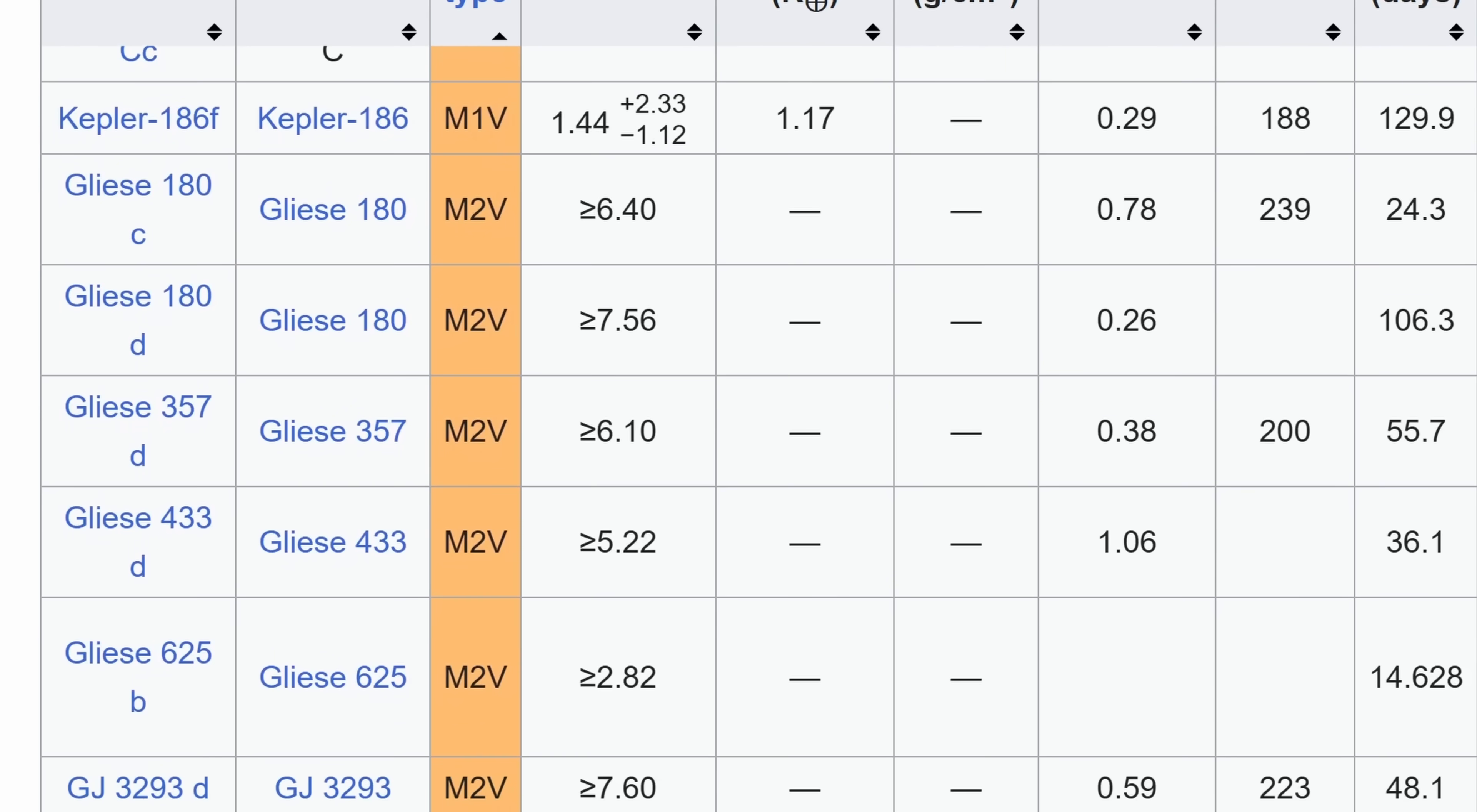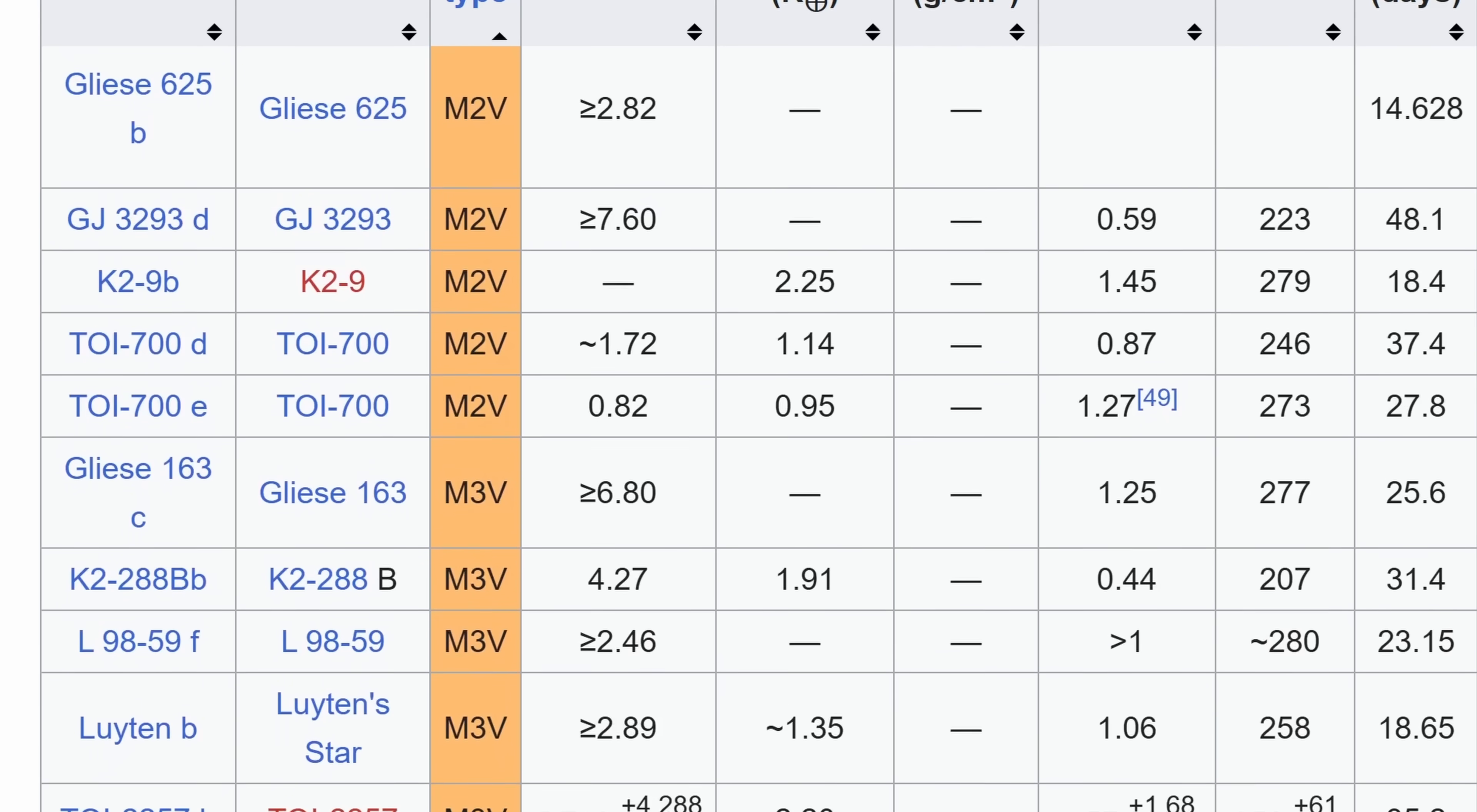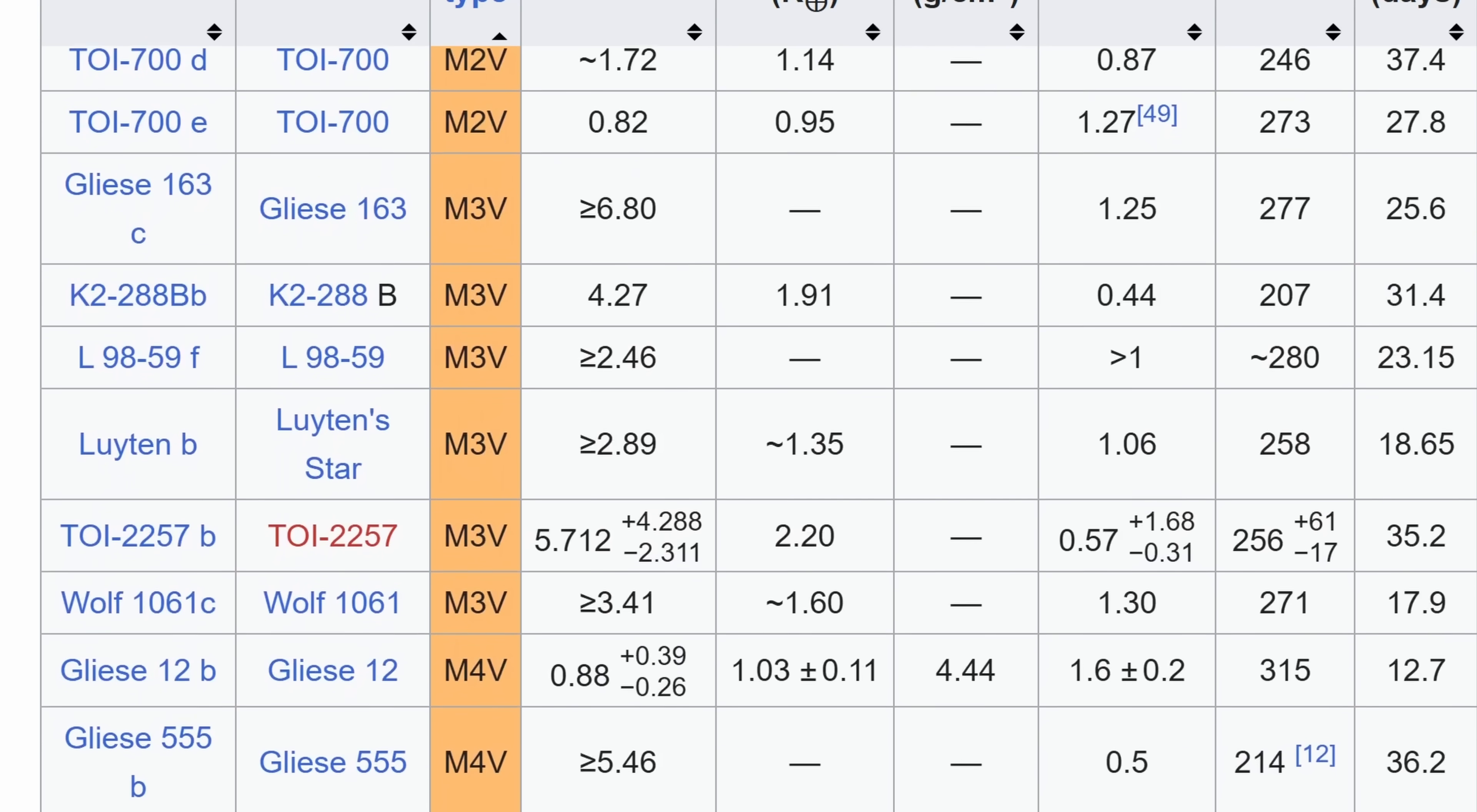On top of this, we probably don't want to study planets around stars that are too active or too extreme, such as the famous red dwarfs. And the thing is, if you look at this list, the majority of planets discovered are basically around M-type stars, red dwarfs.